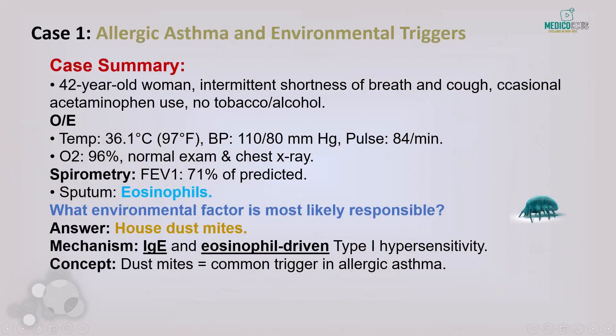Case 1: A 42-year-old woman with episodic shortness of breath and cough for several months. Her sputum analysis reveals eosinophils and she has no significant smoking history. The critical clue is sputum eosinophils, pointing directly to allergic asthma. A common trigger is house dust mites. Eosinophilic inflammation is a hallmark of allergic asthma, and this case highlights how environmental allergens trigger asthma through a type 1 hypersensitivity reaction where eosinophils and IgE play central roles.